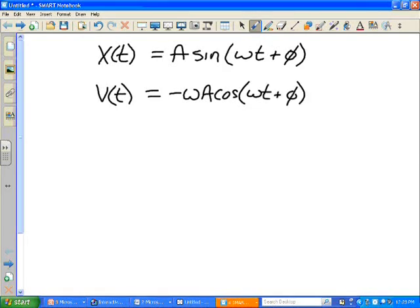So, the derivative of our top function here should just be negative omega A cosine omega t plus phi. And likewise, we can do the same thing. We can take another derivative and we can get the function for acceleration.